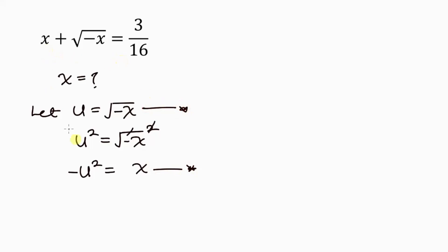Now we have x, so our x is negative u squared — I'll write negative u squared there — plus the square root of negative x, the scary part, which I'm replacing with u. So this is: negative u squared plus u, equal to 3 over 16.